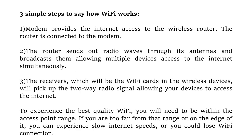Now we can see the three simple steps of how Wi-Fi works. First, the modem provides Internet access to the wireless router. The router is connected to the modem. The router then sends out radio waves through its antennas and broadcasts them, allowing multiple devices to access the Internet simultaneously.